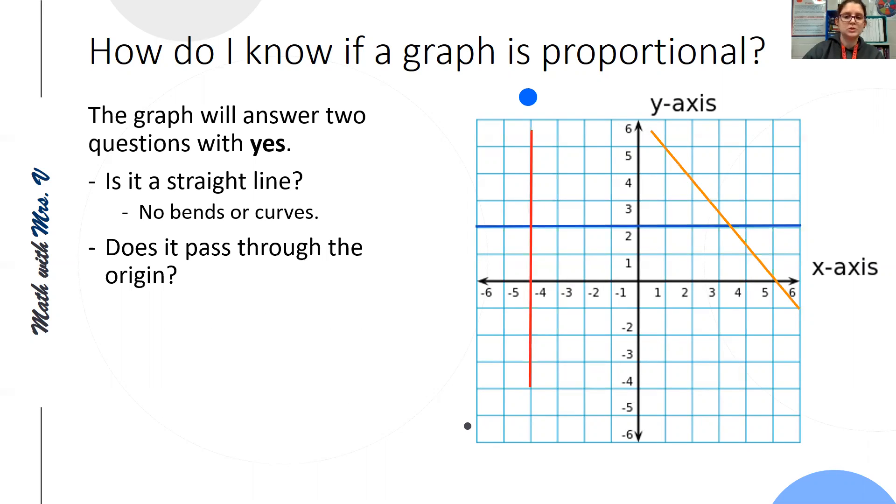The other thing we look at is, does it pass through the origin? So the origin, remember, is where the x and y-axis cross each other. So none of the graphs I've drawn pass through the origin, but I can put one more down that follows both the rules. So it is straight and it passes through the origin. So of the four different colored lines on this graph, the green one would be proportional. It's a straight line that passes through the origin.